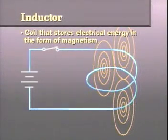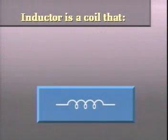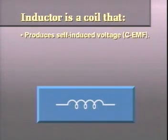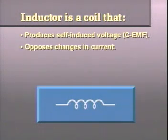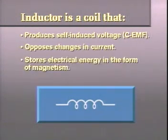Another way to define an inductor, therefore, is as a coil that stores electrical energy in the form of magnetism. An inductor, then, is a device or coil that produces self-induced voltage, or CEMF, opposes changes in current, and stores electrical energy in the form of magnetism.